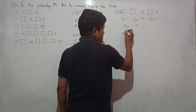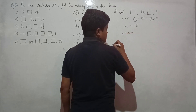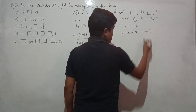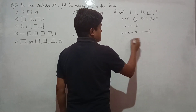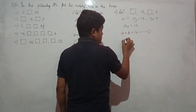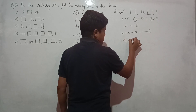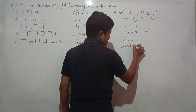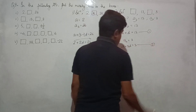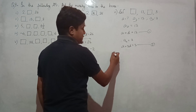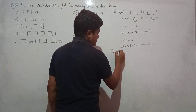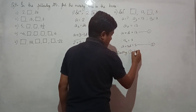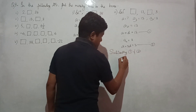Whenever a2 or a4 is given, just put the formula. a plus (2 minus 1)d equals 13 — this becomes equation 1. Similarly for a4: a plus (4 minus 1)d equals 3, so a plus 3d equals 3 — this is equation 2.